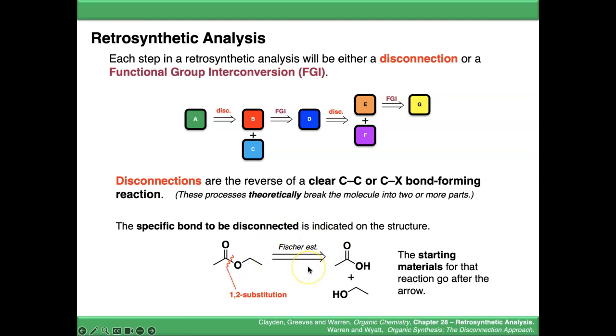or they might give it a name. For example, over the arrow, this is a Fisher esterification. Just to add a bit more information to the retrosynthetic plan, so the reader can see exactly what they're proposing to do in this step.